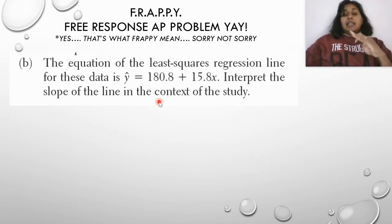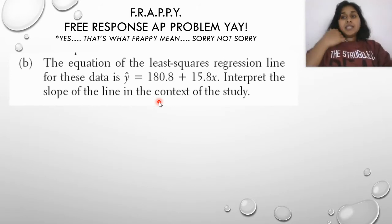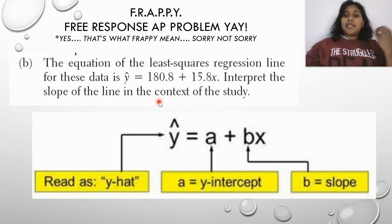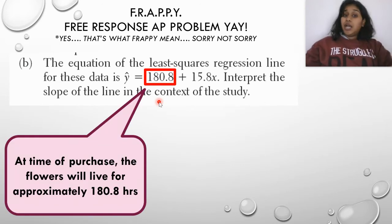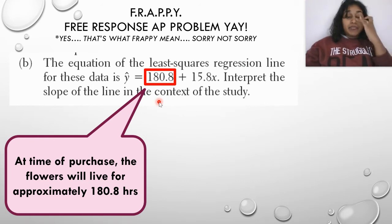Getting into LSRLs, or least square regression lines. The equation of our LSRL is y-hat equals 180.8 plus 15.8x. So interpret the slope of the line in context. I'm going to go ahead and interpret both parts. The entire LSRL: the a-value is our y-intercept and the b-value is our slope. So 180.8 is our a-value, our y-intercept. In context, at the time of purchase the flowers would live for approximately 180.8 hours, or if you put no sugar in, your flower is going to live for 180.8 hours.